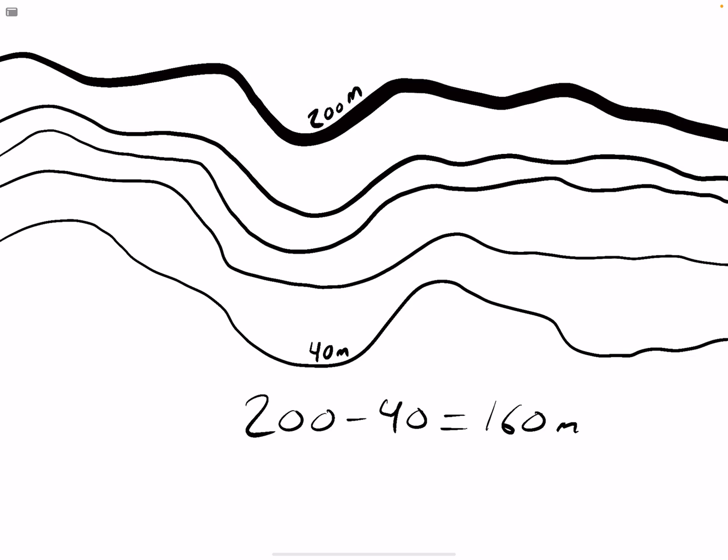I got the 200 from that thick index contour line, and then at the bottom we have our 40 meters. So we did 200 minus 40 equals 160 meters.